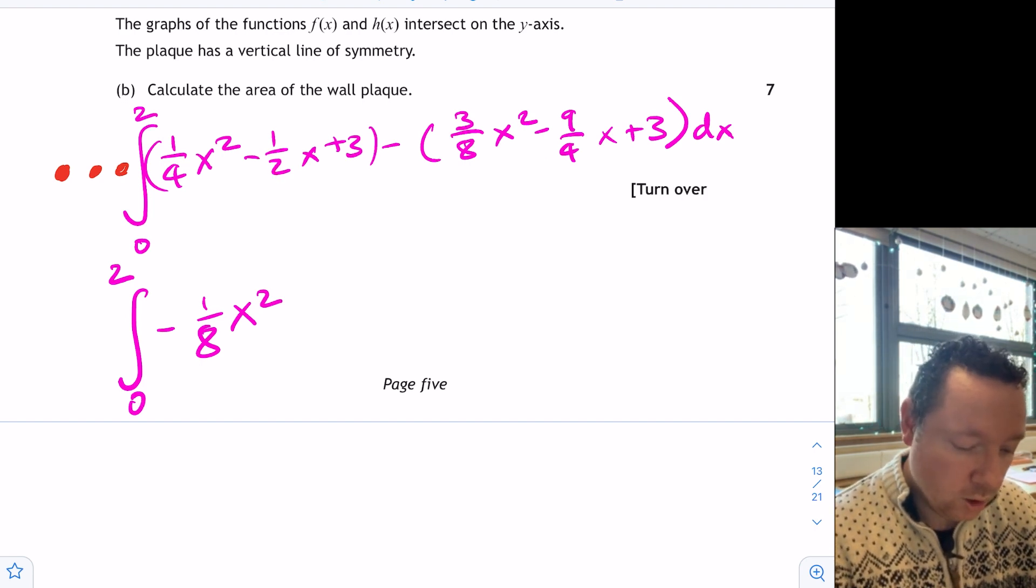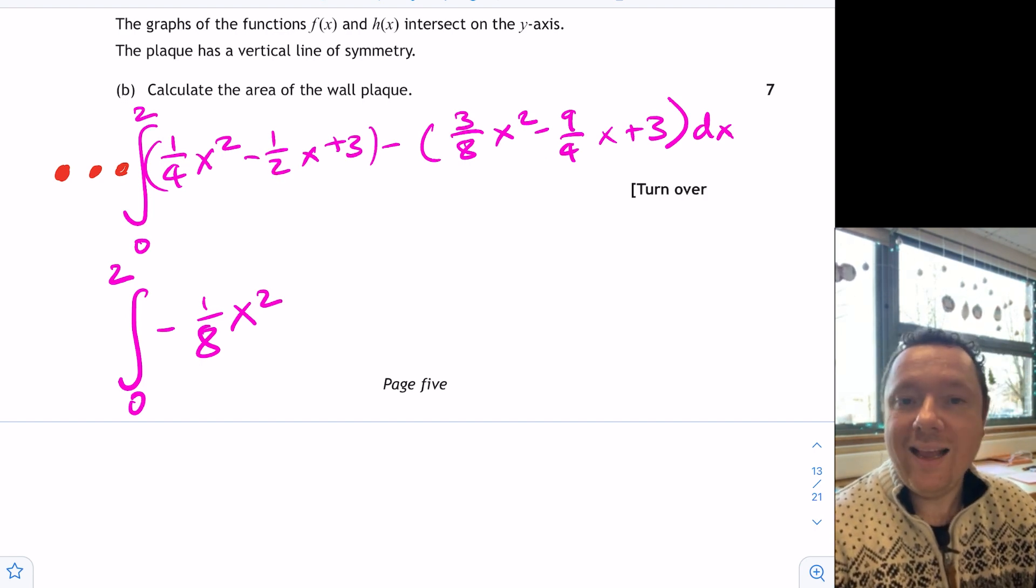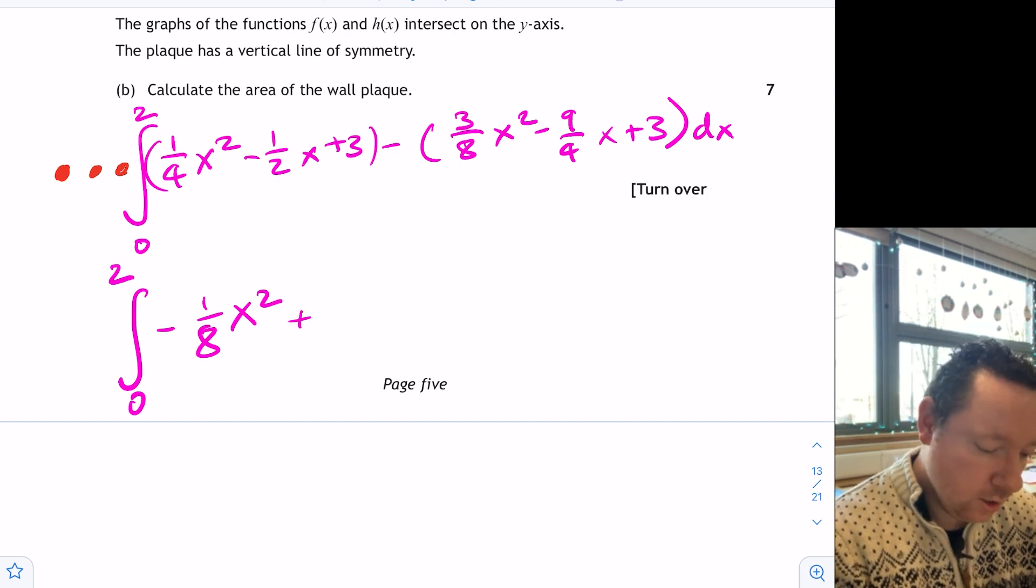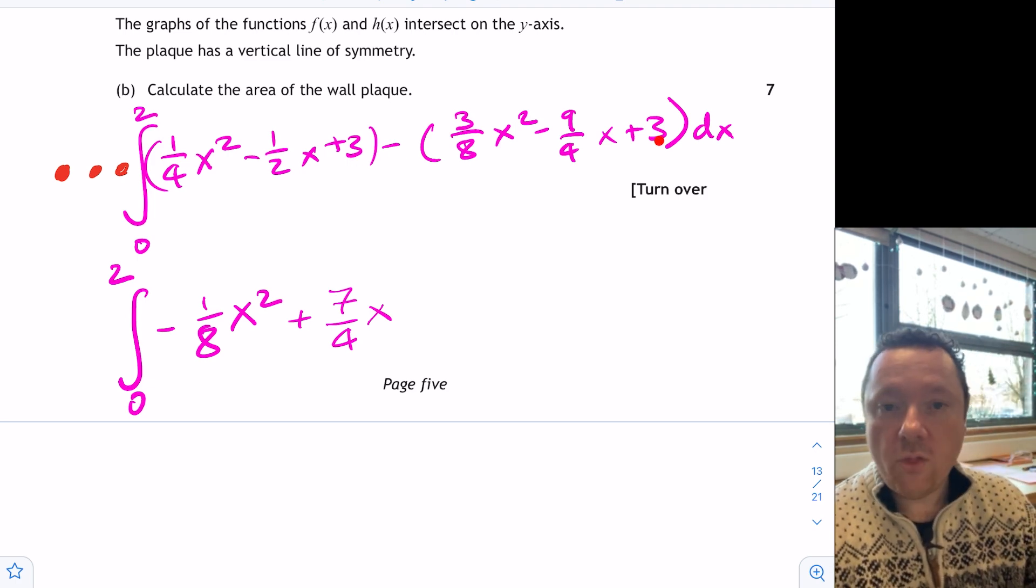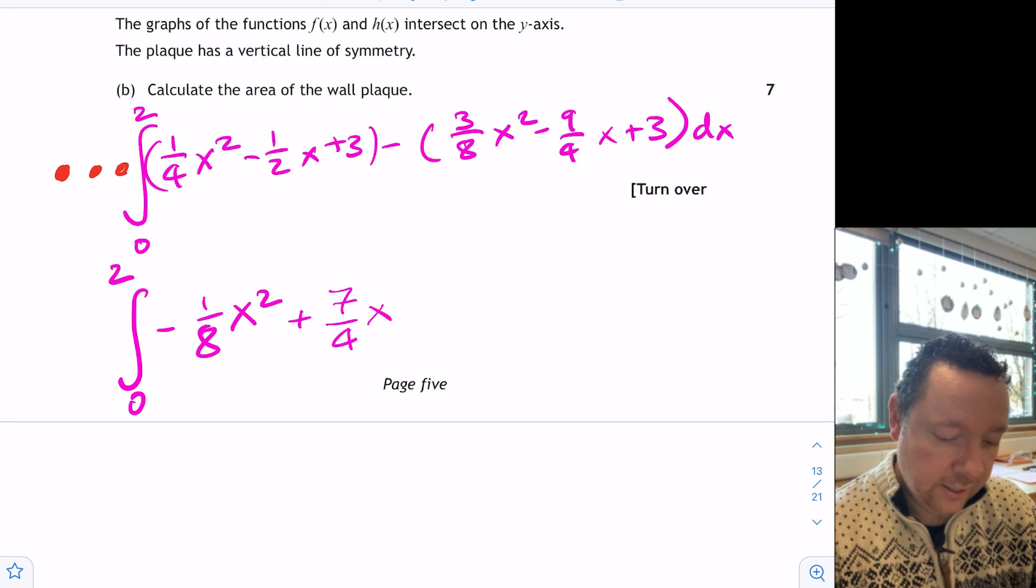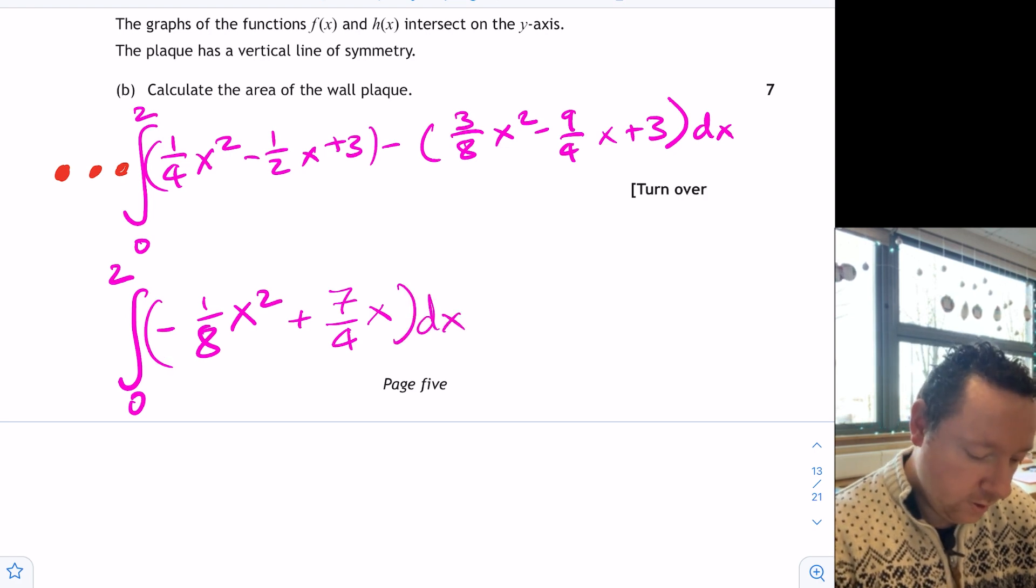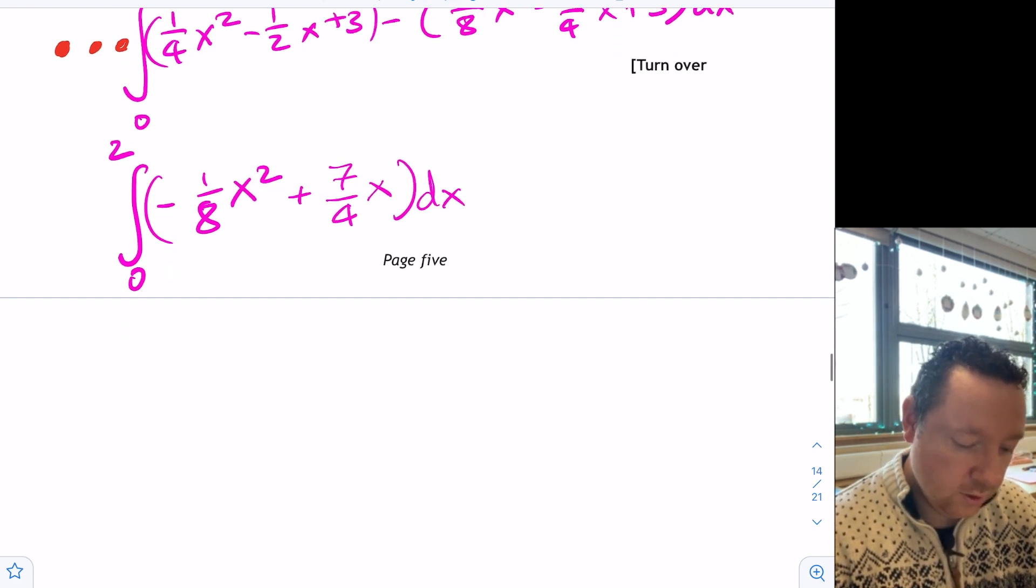Looking at the x parts, you've got minus a half minus minus becomes plus. So plus nine quarters. Well, putting a half simply in quarters is two quarters. So you've got minus two quarters plus nine quarters is seven quarters. So plus seven quarters x. And then we've got our number parts but they cancel. Three take away three is nothing. So we get the integral of this between zero and two.